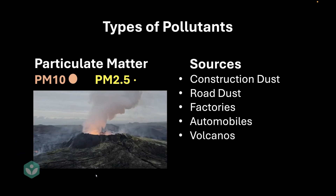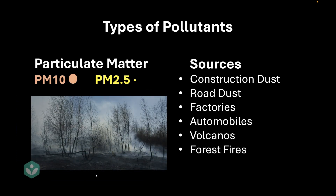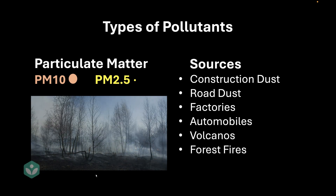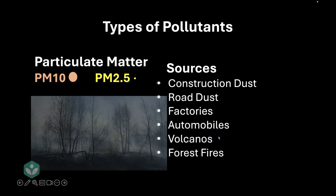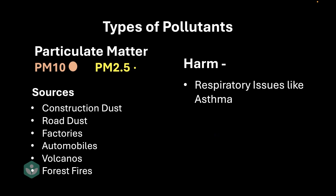Volcanoes are a natural source of particulate matter. Even forest fires produce a lot of particulate matter, and that stays suspended in the atmosphere. Now, what's the harm of having these tiny particles in the atmosphere? Particulate matter can cause respiratory issues like asthma, as well as burning or irritation in the eyes. It can even cause lung cancer. It's pretty serious.